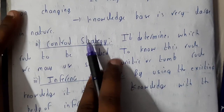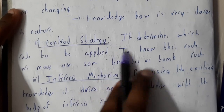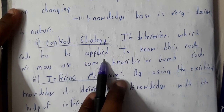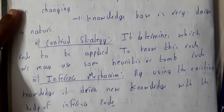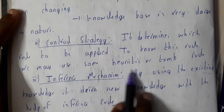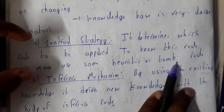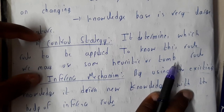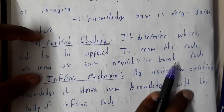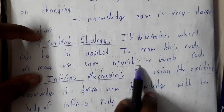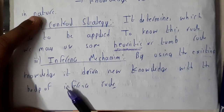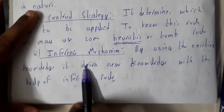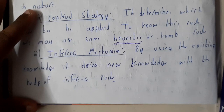Control strategy determines which rule to be applied. To decide on rules, we may use heuristics or thumb rules. Control strategy is essentially about what to apply — we'll be using heuristic searches, which we'll discuss later, along with some thumb rules to arrive at the result.